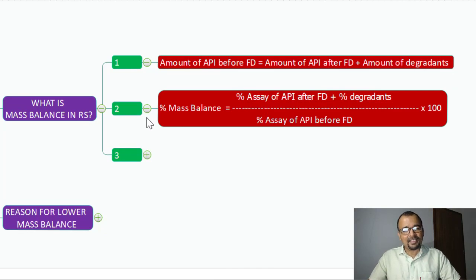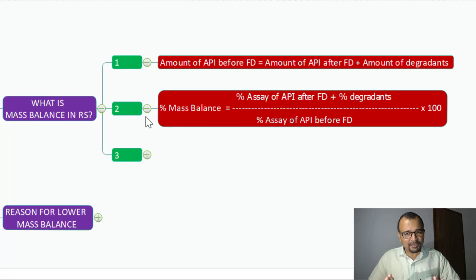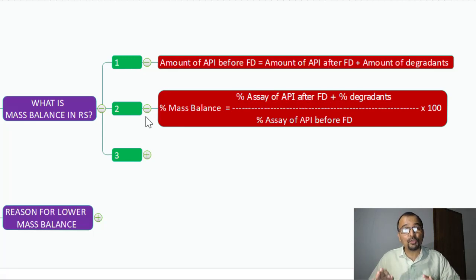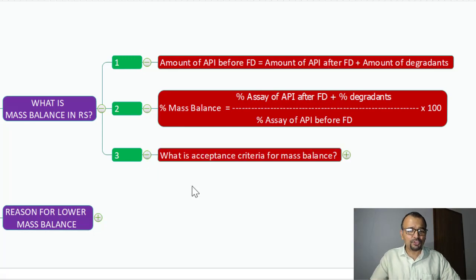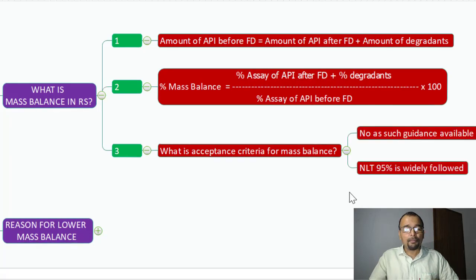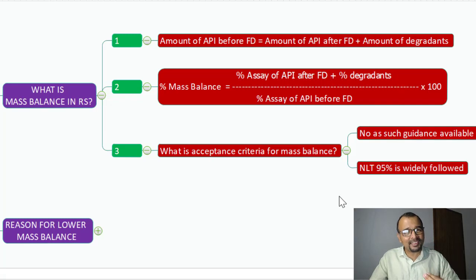Here is the calculation formula for mass balance in related substances: percent mass balance equals percent assay of the API after forced degradation, plus percent degradants, divided by percent assay of the API before forced degradation, multiplied by 100. If you look into various regulatory guidelines, you will not find any specific acceptance criteria, but not less than 95% is widely accepted and used across many organizations.